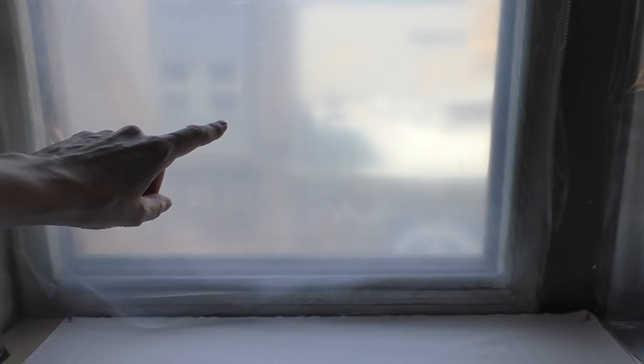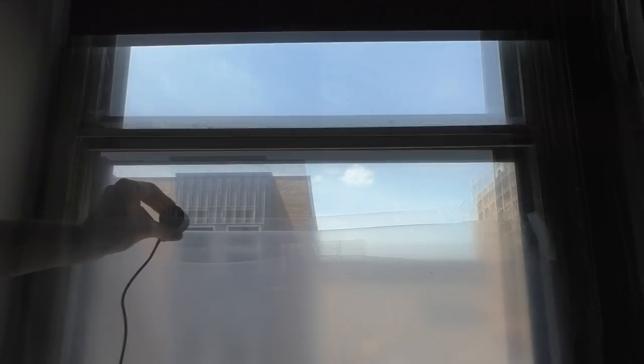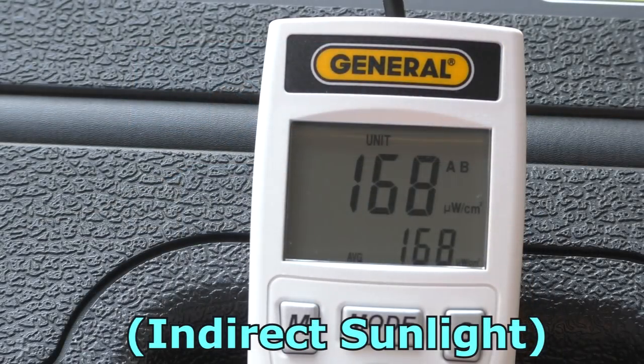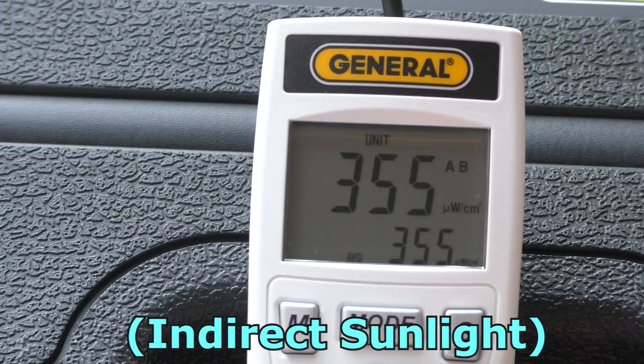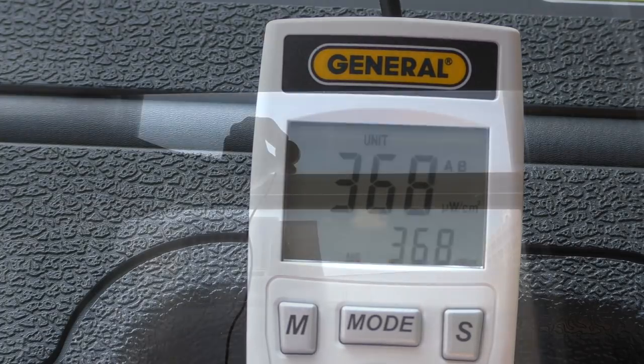So I've got two layers of the AgFilm here in the office window. But up here, this is just plain open glass, so I'm going to use this to test first. Put the sensor up here to the glass window, and I'm getting about 360, 370 microwatts per cubic centimeter just through the glass.